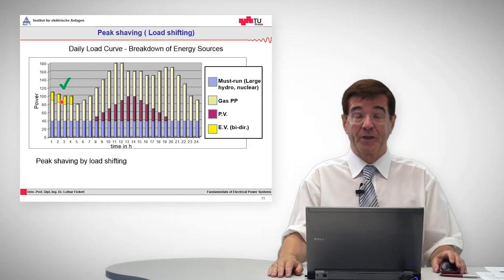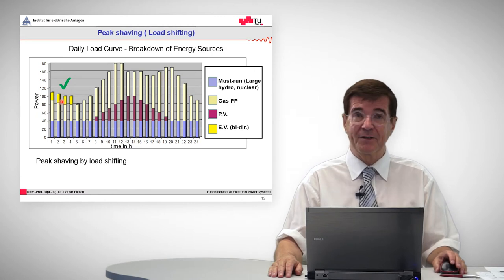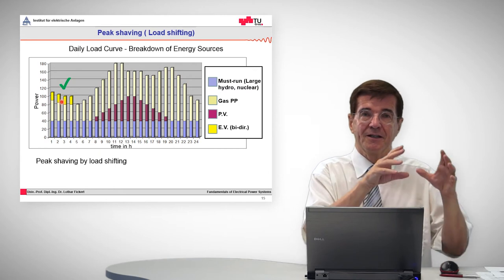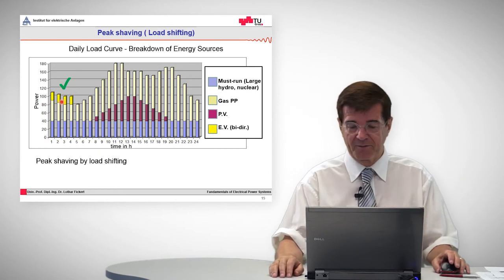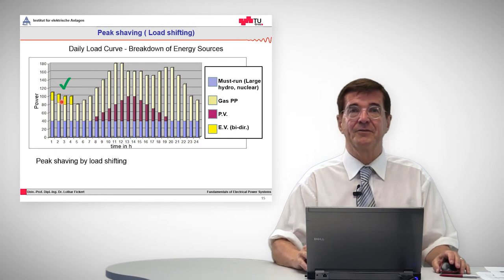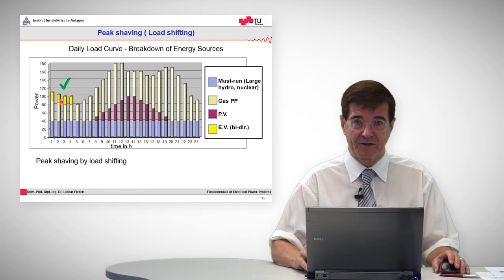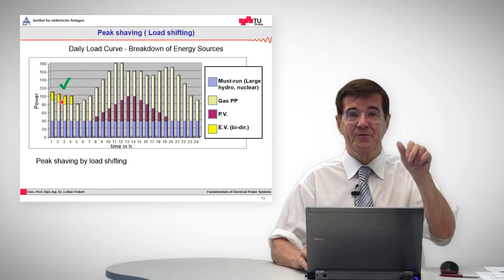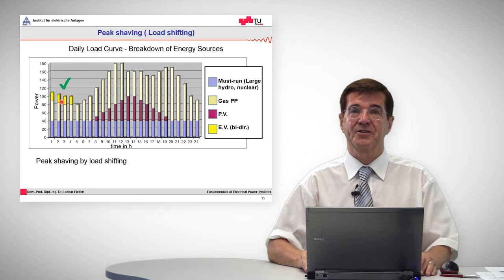Peak shaving is just one example of smart grid applications. There are other applications like sharing the generation proportions between generation group A and B, or influencing other properties of electrical grids like reconstruction and reconfiguration of the grid after a fault. And this is the future of smart grids, which unite the two worlds: the world of electrical energy and the world of information and communication technologies.